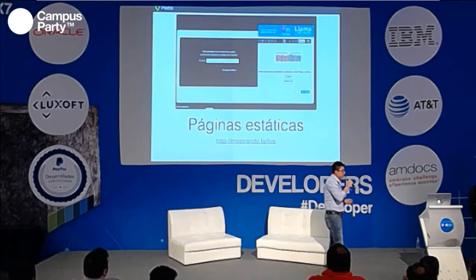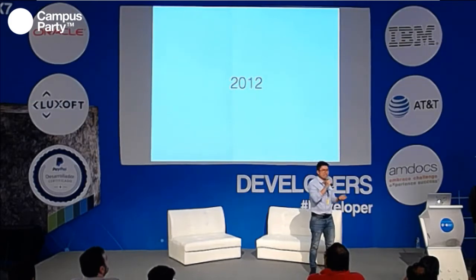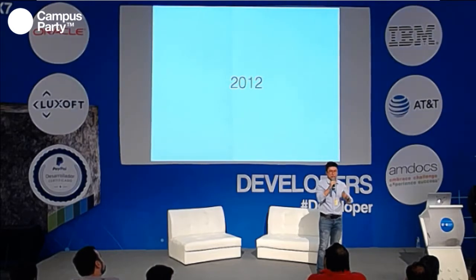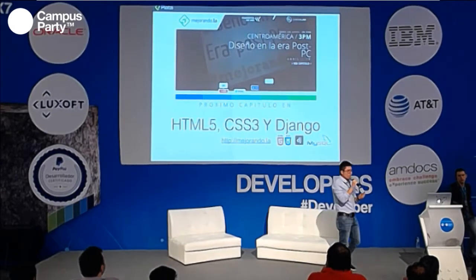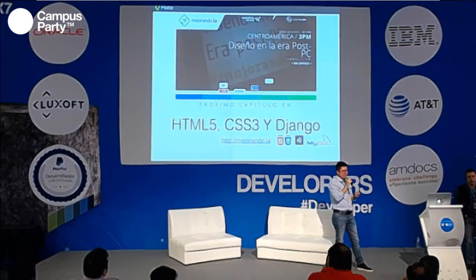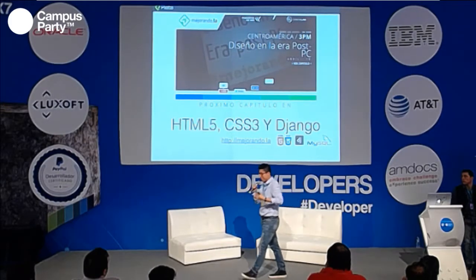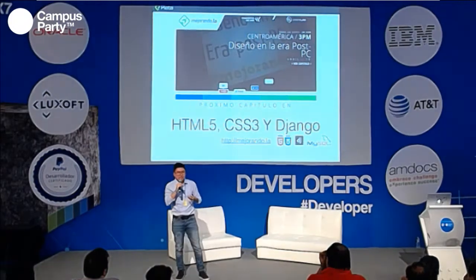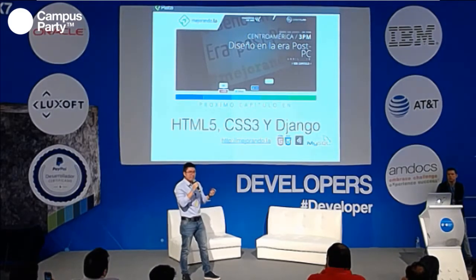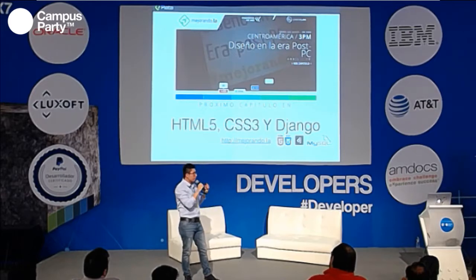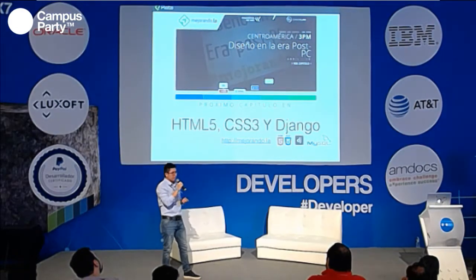Esta historia realmente empieza en el 2011, cuando ya no solo es Christian y Freddy sino empieza todo el equipo de Platzi a ser parte. El primer producto que nosotros hicimos es mejorando.la, HTTP://mejorando.la, que tuvo ese diseño. El backend estaba en Python con Django, y esas fueron nuestras tecnologías hasta ese momento. De base, obviamente, MySQL.